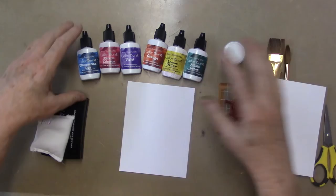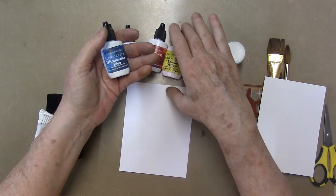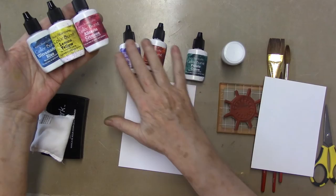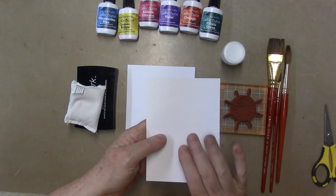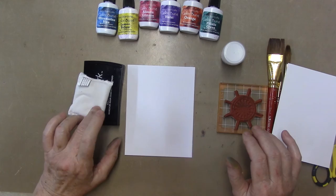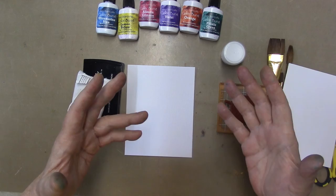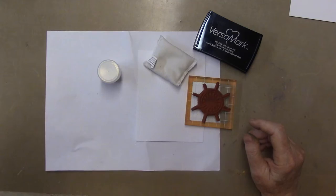I have these in primaries of ultramarine blue, lemon yellow, and alizarin crimson, and secondaries violet, orange, and phthalo green. We're going to use a little watercolor paper. I'm also going to try them on 110 pound cardstock, with heat embossing and pigment inks today. I'm going to do a couple trial runs and see how they go.